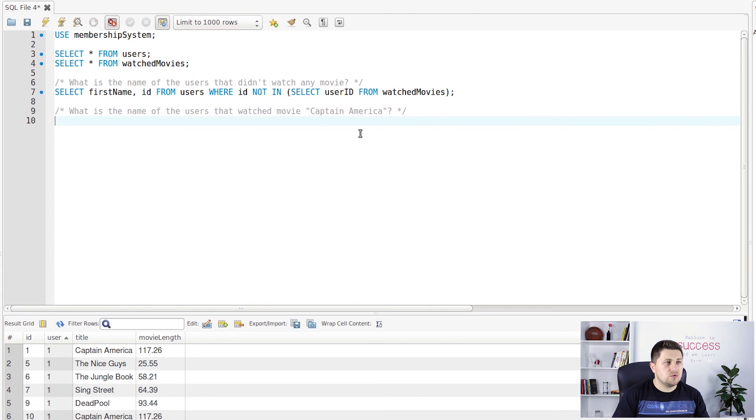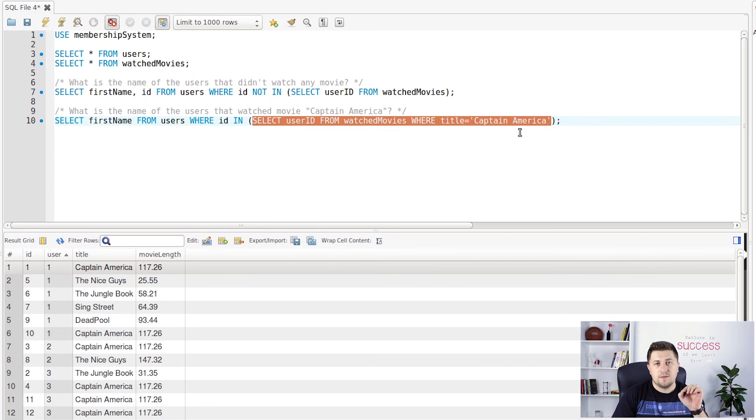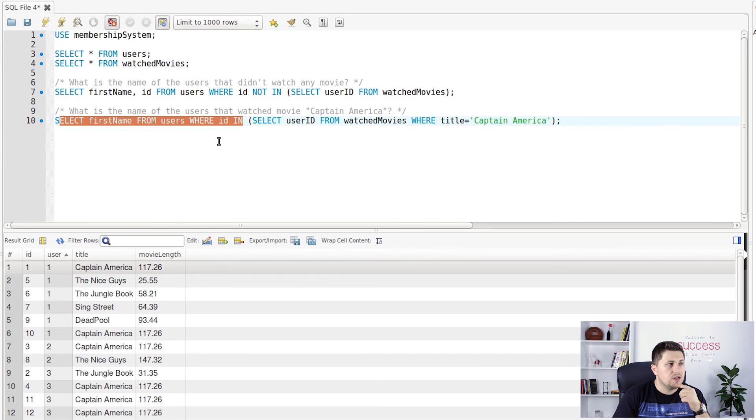And now we have the second question which is our second example: what is the name of the user that watched movie Captain America. And now we need to do the same thing again. SELECT first name FROM users WHERE ID IN, SELECT user ID FROM watched movies WHERE title equals Captain America. And now let's first check this. So we have here user and the title Captain America. So we want with this query just to select users that watched movies with the title Captain America, and in this main query we want to get the first name for the users which ID is in this list.